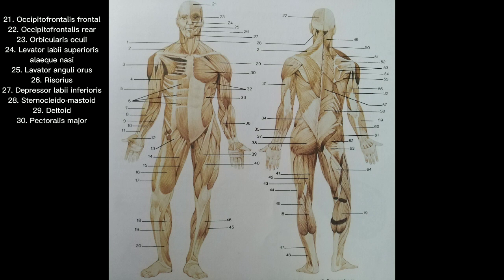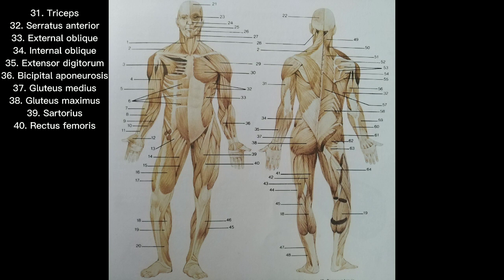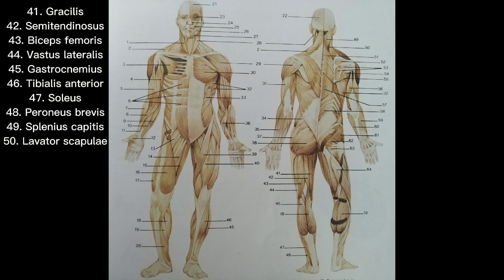The facial and additional muscles include: 21. Occipitofrontalis frontal, 22. Occipitofrontalis rear, 23. Orbicularis oculi, 24. Levator labii superioris, 25. Levator anguli oris, 26. Risorius, 27. Depressor labii inferioris, 28. Sternocleidomastoid, 29. Deltoid, 30. Pectoralis major, 31. Triceps, 32. Serratus anterior, 33. External oblique, 34. Internal oblique, 35. Extensor digitorum, 36. Bicipital aponeurosis, 37. Gluteus medius, 38. Gluteus maximus, 39. Sartorius, 40. Rectus femoris, 41. Gracilis, 42. Semitendinosus, 43. Biceps femoris, 44. Vastus lateralis, 45. Gastrocnemius, 46. Tibialis anterior, 47. Soleus, 48. Peroneus brevis.